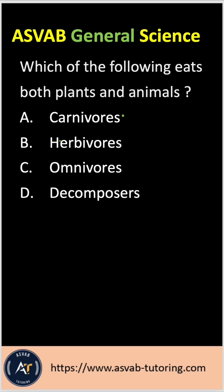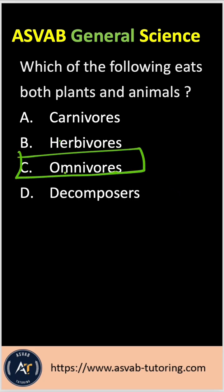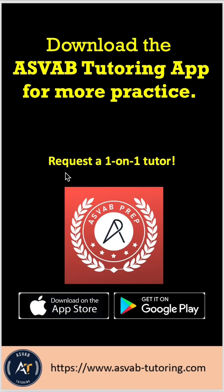Let's learn each of the terms. Option A, carnivores, eat only animals. Option B, herbivores, eat only plants — 'herb' means plant. Option C, omnivores, eat both plants and animals — 'omni' means all. Option D, decomposers, break down animals and plants. So the answer is option C, omnivores.